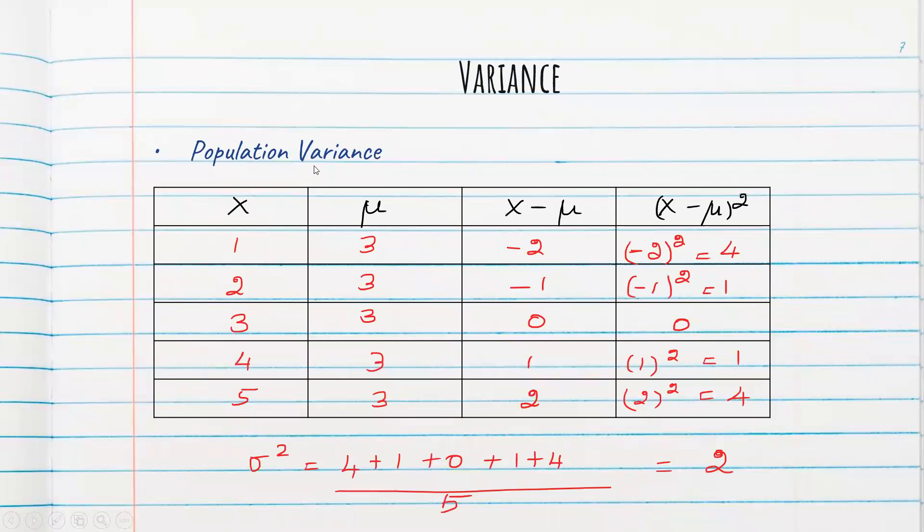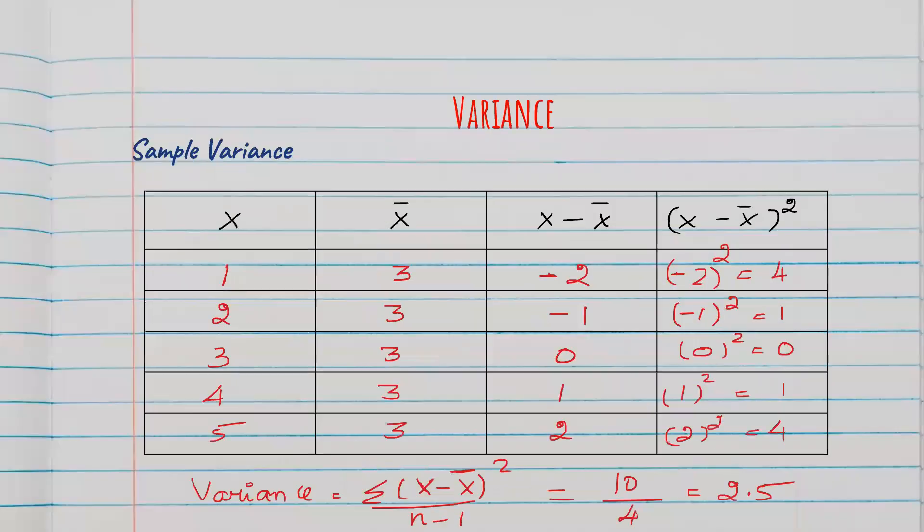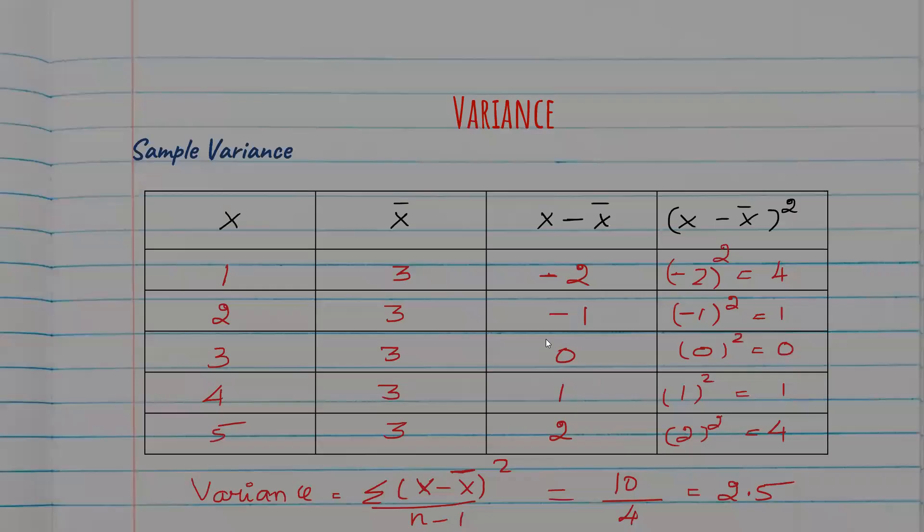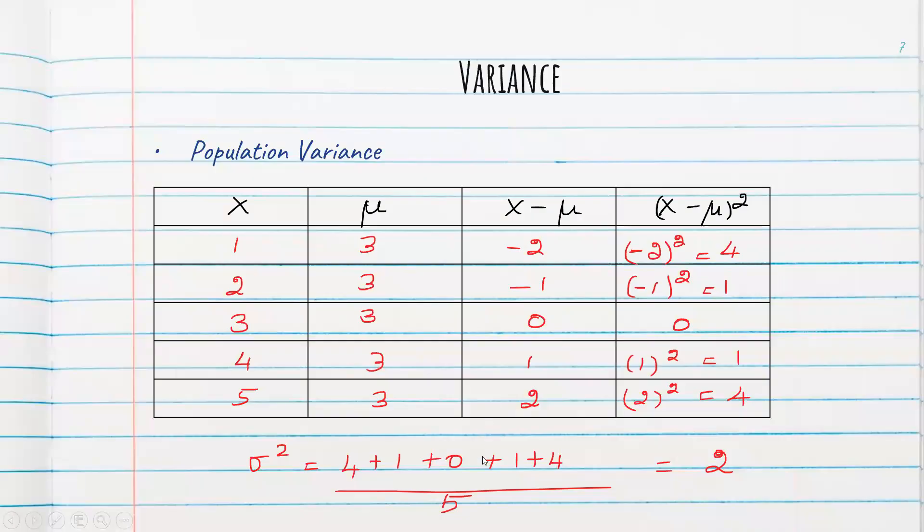So in case if we find population variance for the same problem, what we will do? We get the same observation. Instead of 4, we will divide it by n. That is the formula for population variance. You can see we have to divide it by capital N. So once I divide it by 5, the answer is 2.